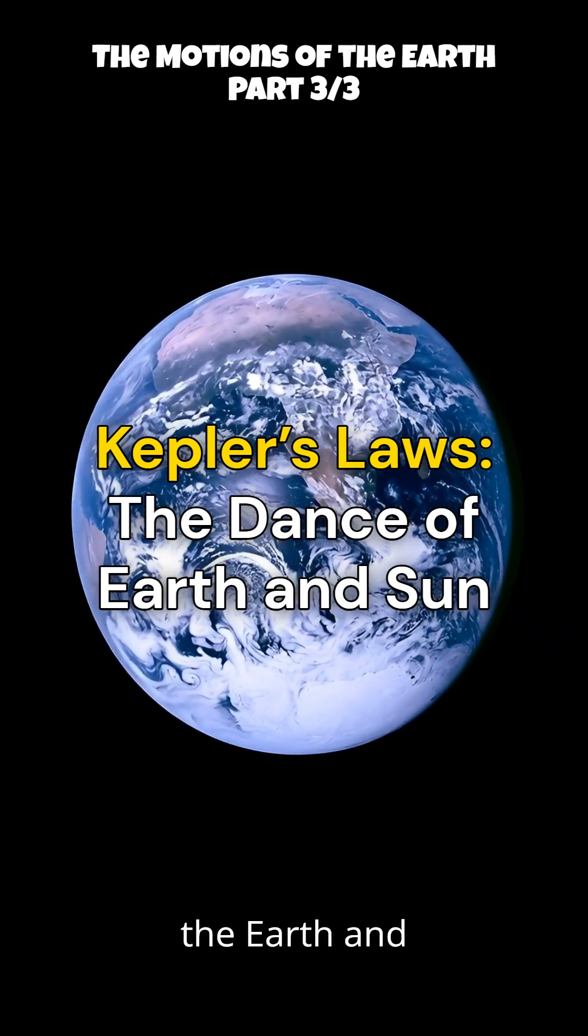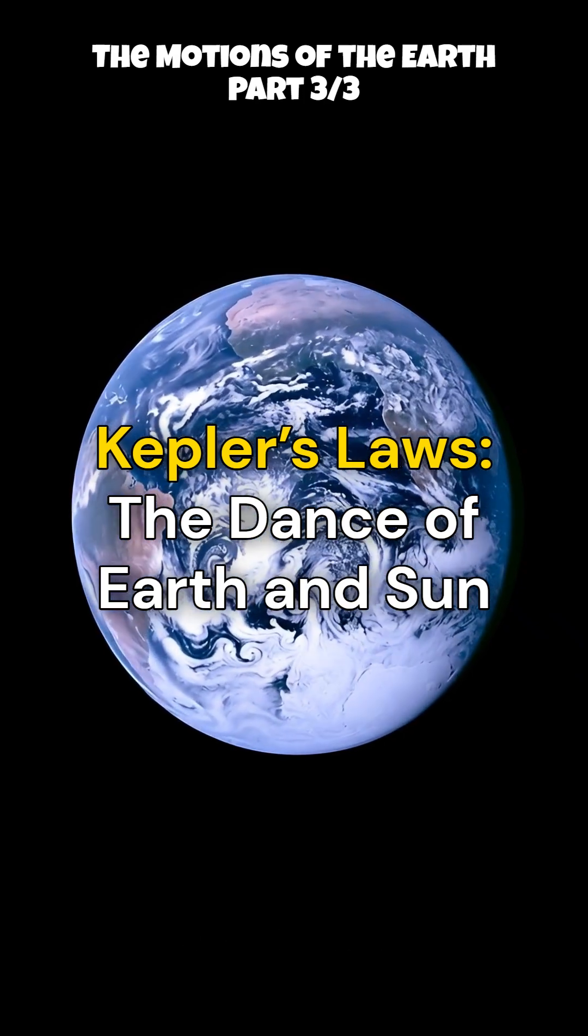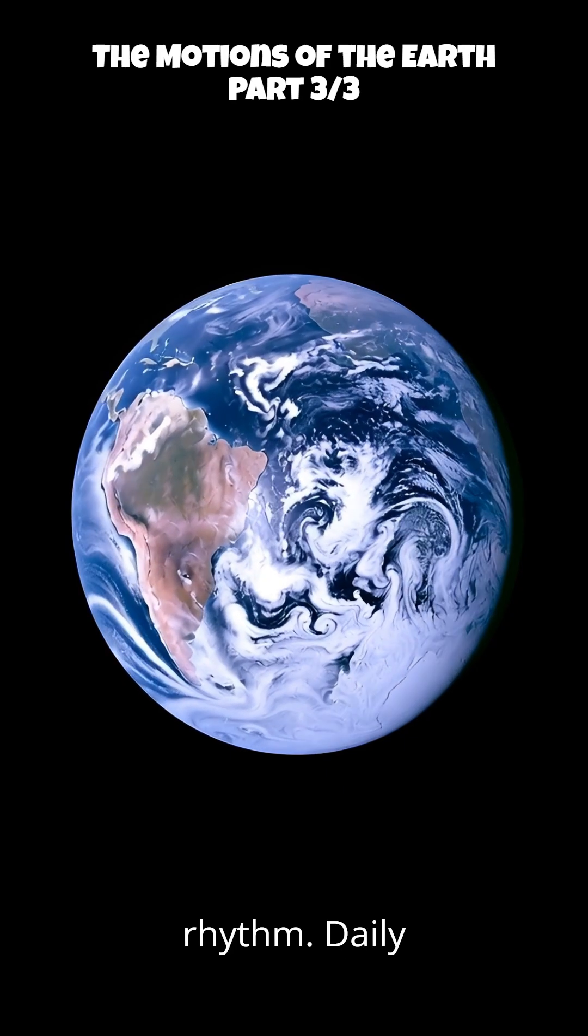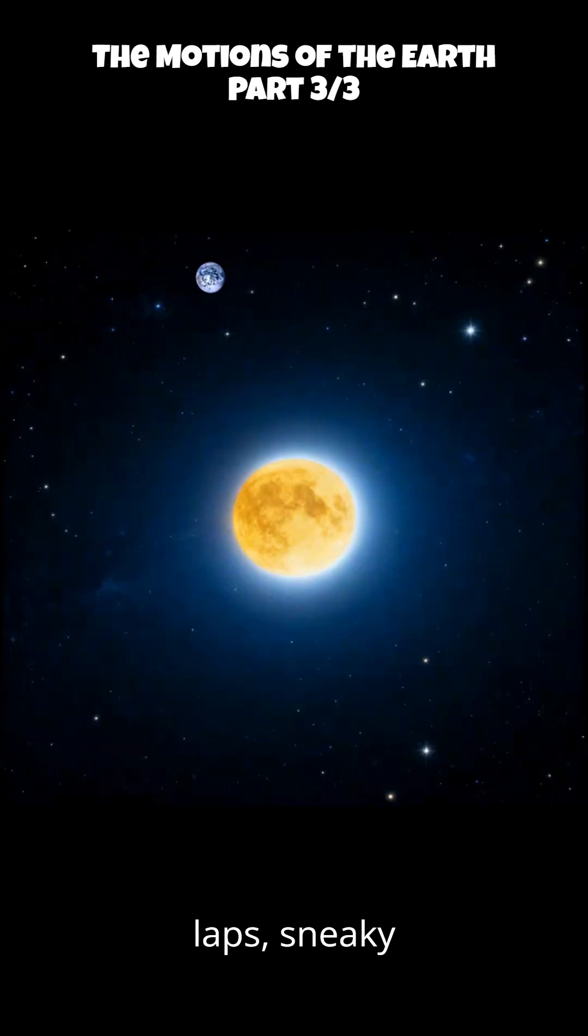Kepler's Laws: The Dance of the Earth and the Sun. Earth's got rhythm - daily spins, yearly laps, sneaky wobbles, and a 23.5 degree tilt that makes seasons happen.